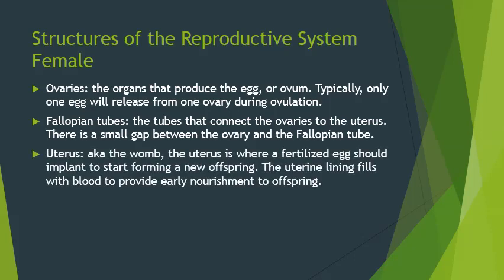The uterus is where a fertilized egg will settle, forming a placenta to feed the developing offspring, and eventually contracts to push the offspring out of the uterus, through the cervix, and down the vagina during delivery.